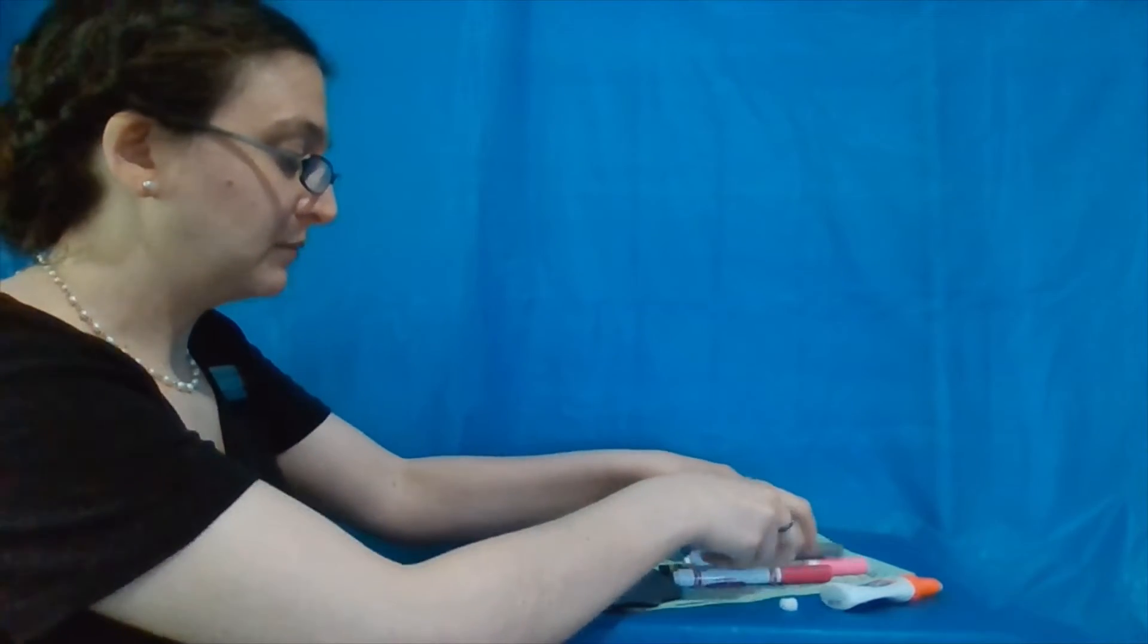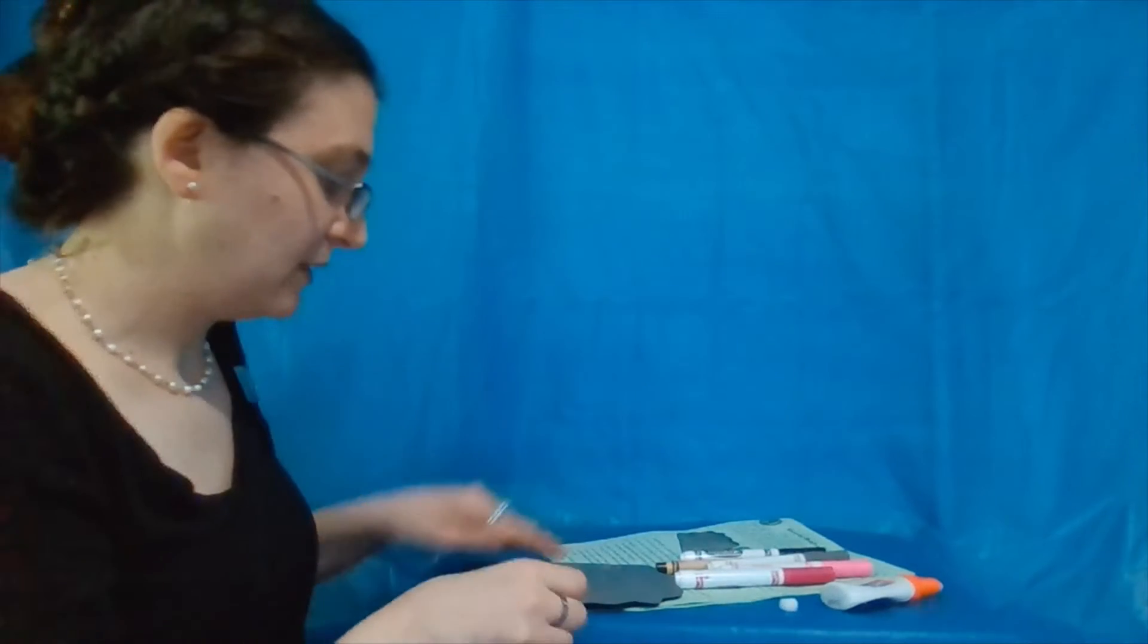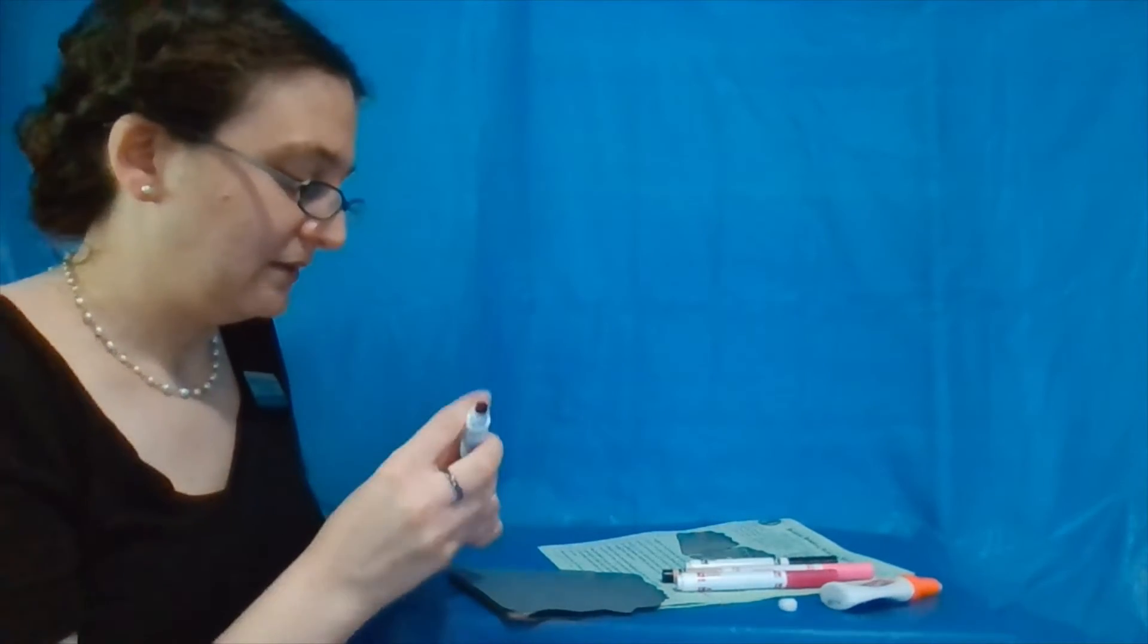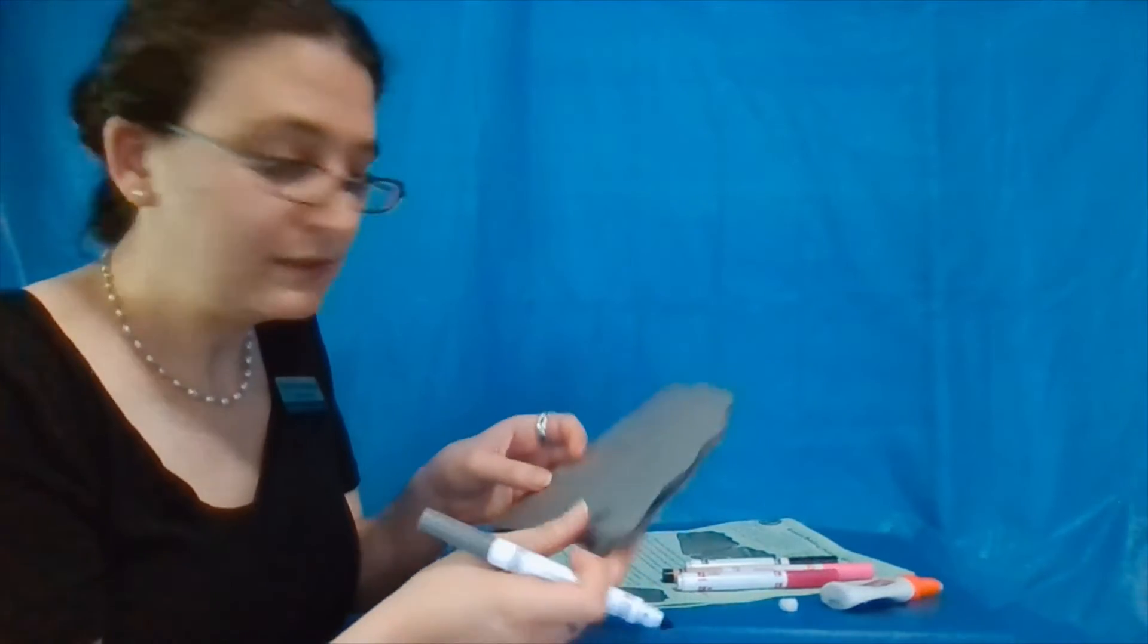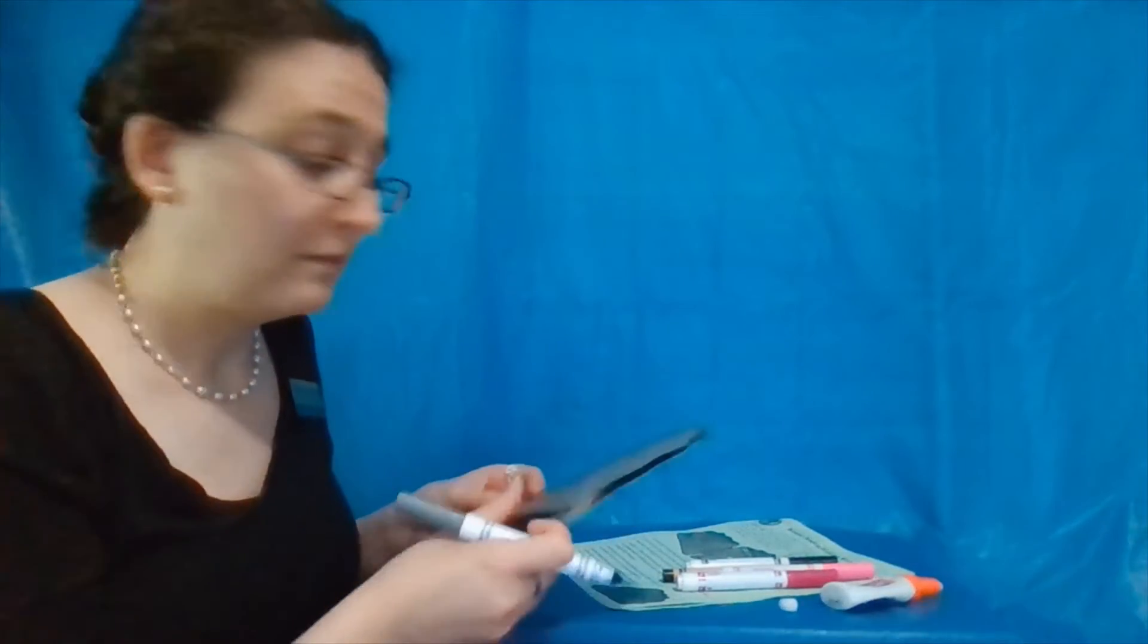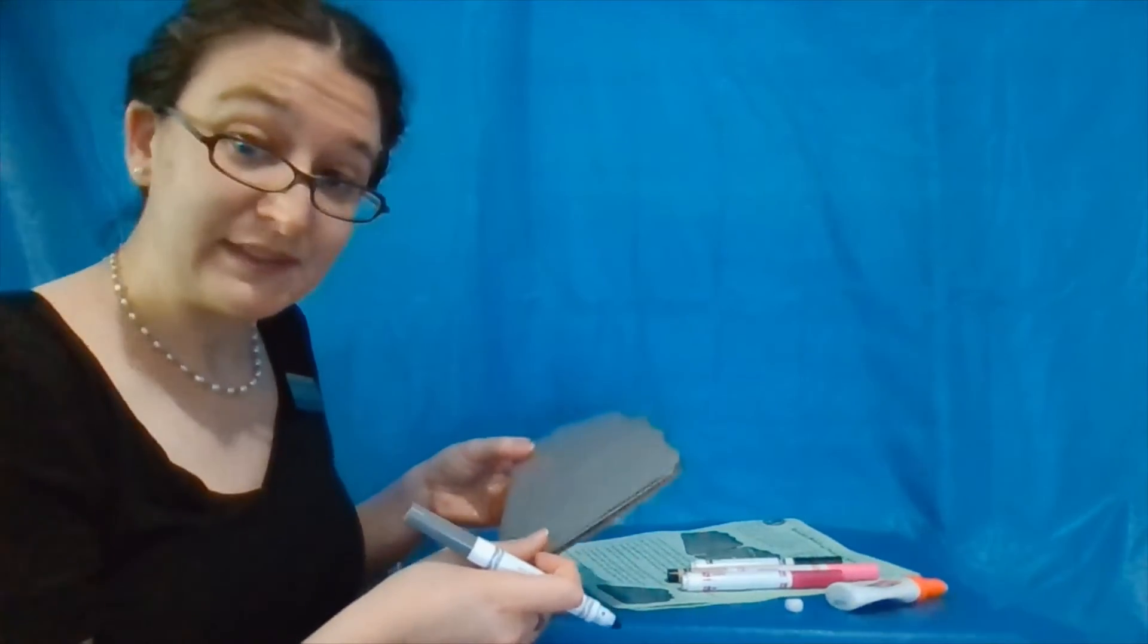Now we've got our oyster shell with the oyster interior. What I'm going to do is just add some small details. I'm going to make the designs on the oyster shell, and then we'll just have one more step.